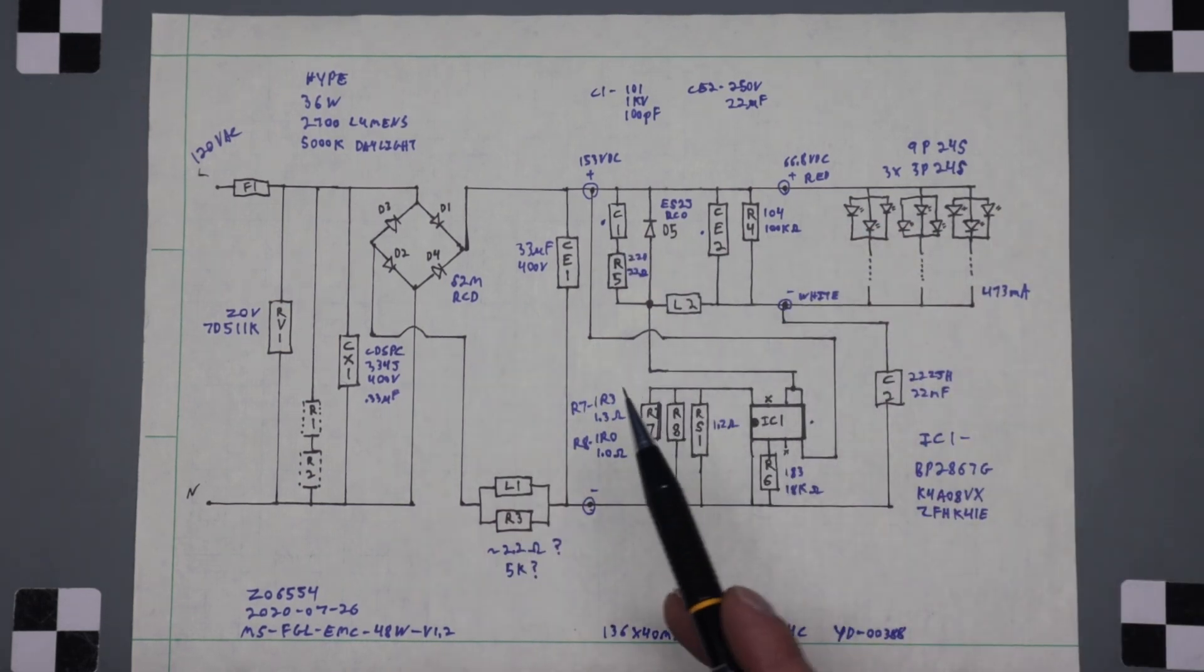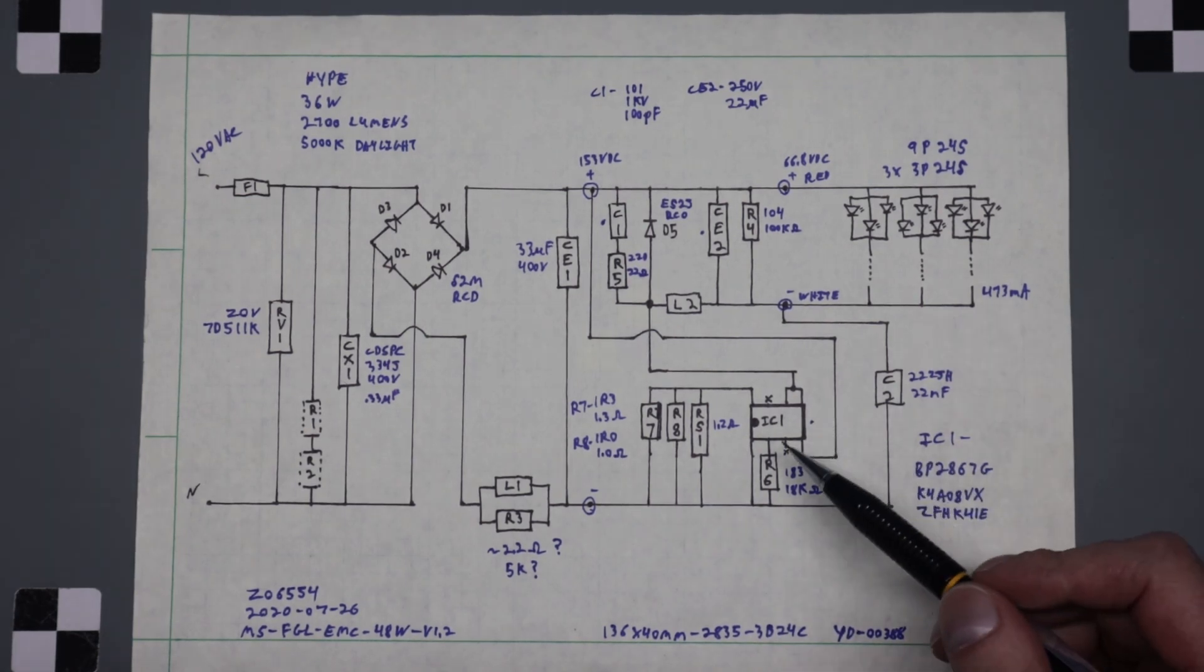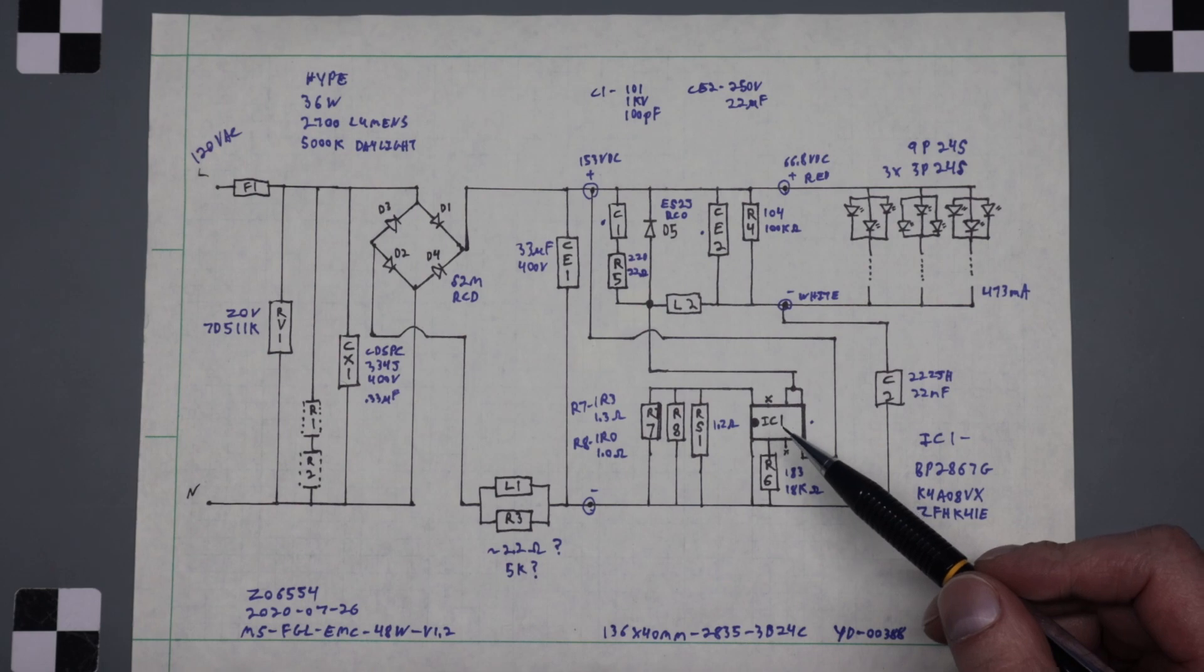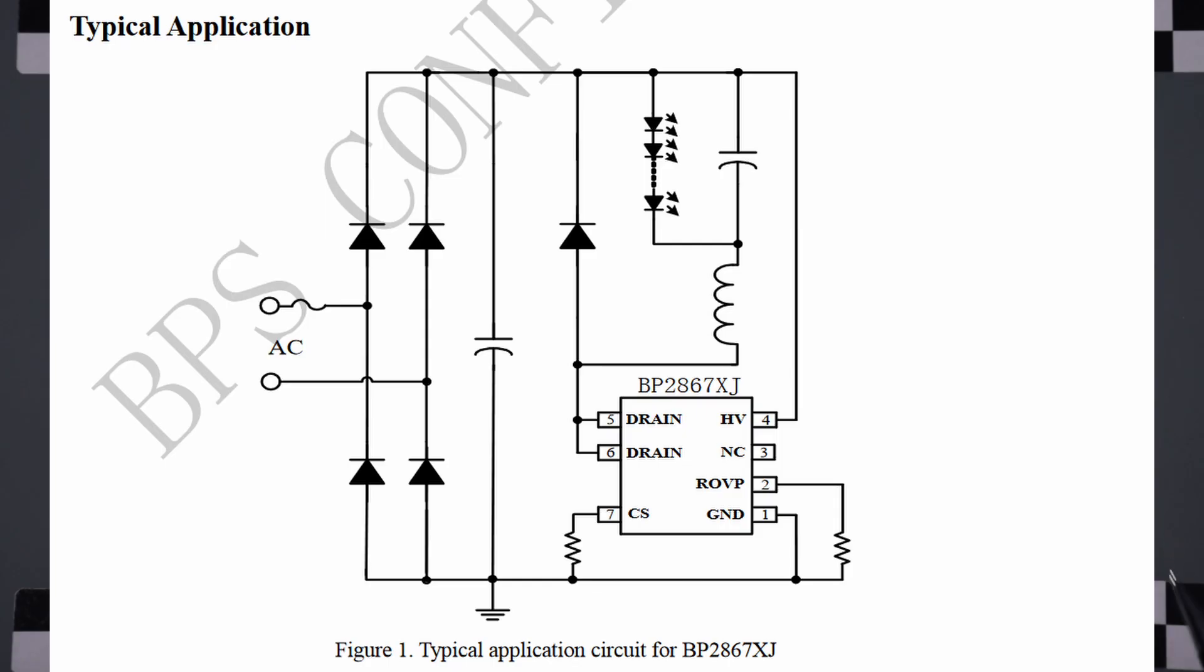And then we cut over into the actual circuit. So the center part is an IC and that is a BP2867G, which is a non-isolated buck offline LED driver. I will throw the actual schematic from the data sheet up on the screen right now.